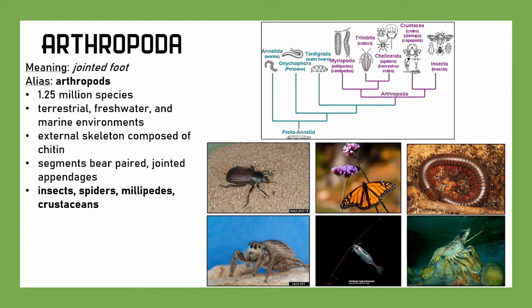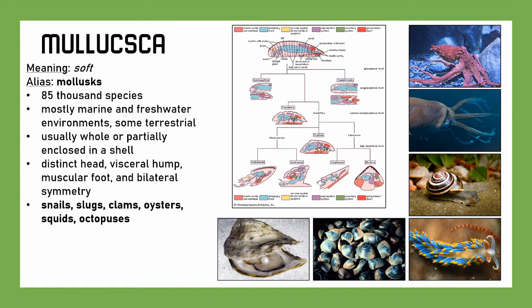Moving along, we have Mollusca. It means 'soft.' They're also known just as molluscs. There are 85,000 species. They are mostly marine and freshwater, though there are a few terrestrial ones — think snails and some slugs. They're usually wholly or partially enclosed in a shell. Most have external shells, like gastropods such as snails, or bivalves, though some have internalized shells like octopus and squid. They have a distinct head, visceral hump, muscular foot, and bilateral symmetry. These include snails, slugs, clams, oysters, squids, and octopuses.